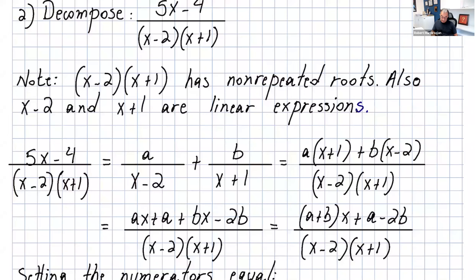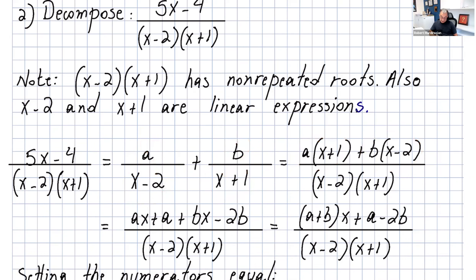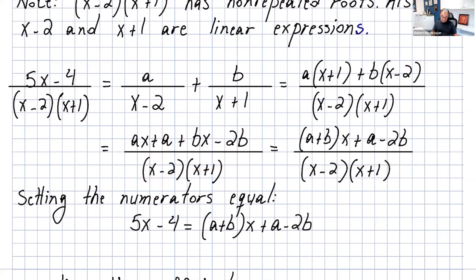Then you write the LCD x minus 2 times x plus 1, and multiply a by x plus 1 and b by x minus 2. Distributing, you get ax plus a plus bx minus 2b. You can collect all terms with x, which gives a plus b times x, plus the constant term a minus 2b. Since the denominators are the same you can cancel them and set the numerators equal to each other.